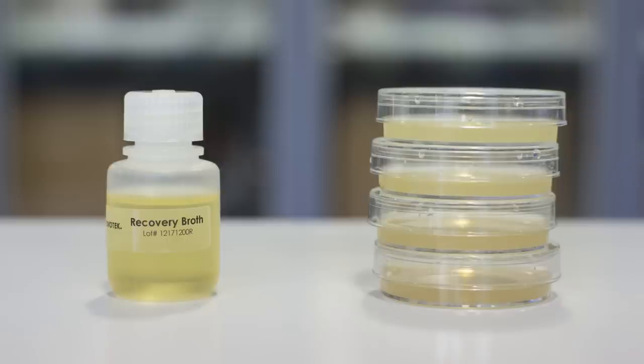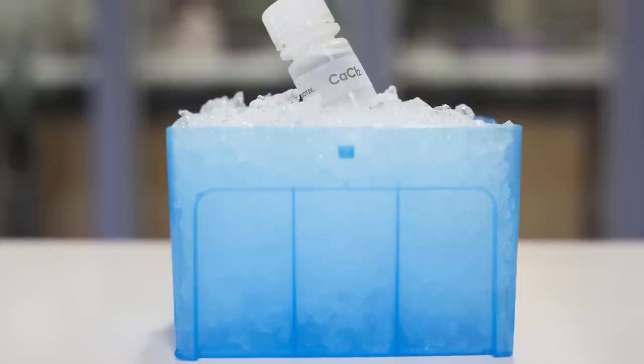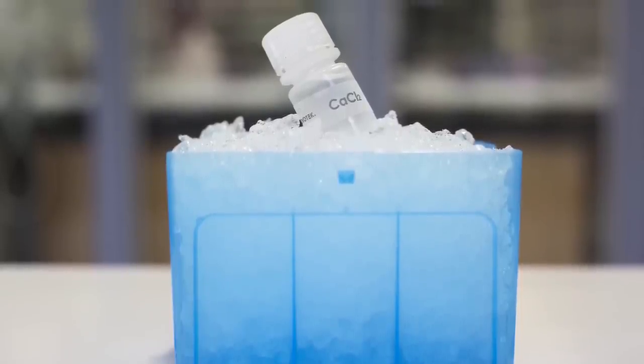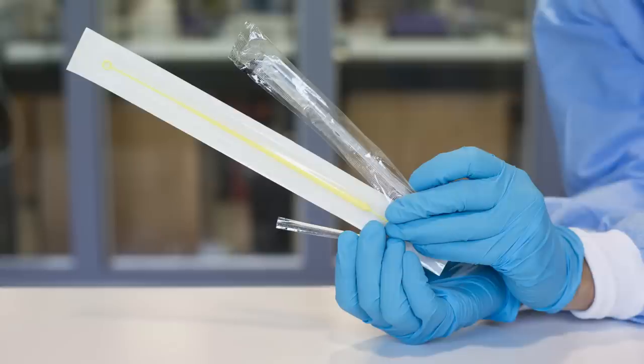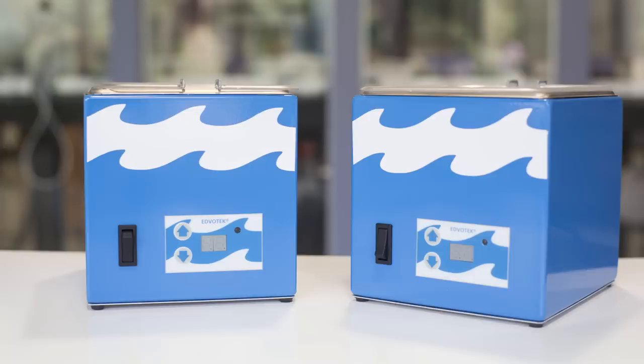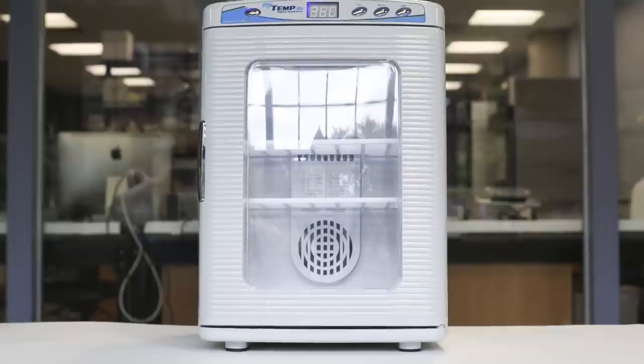You'll also need ice-cold calcium chloride solution and an ice bucket, a micropipette, toothpicks, transfer pipettes and sterile loops, microcentrifuge tubes, two water baths set to 37 degrees Celsius and 42 degrees Celsius, and finally an incubator set to 37 degrees Celsius.